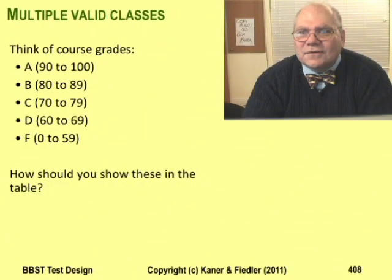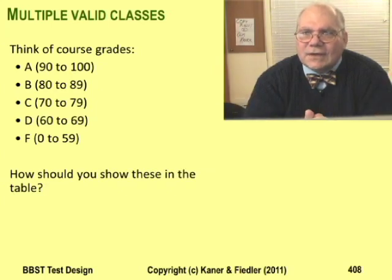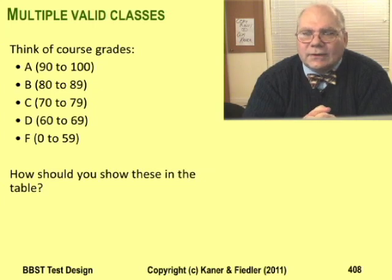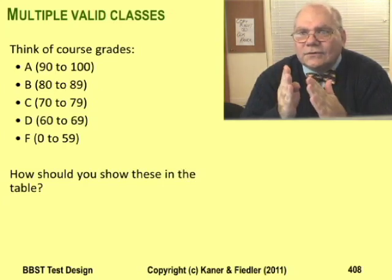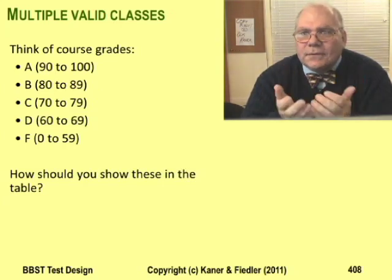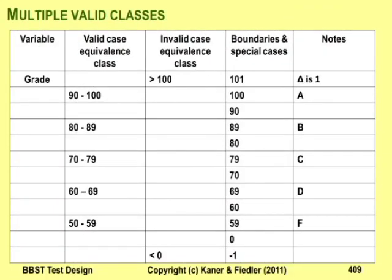So far, I've considered a very simple partitioning. In the page width example, there is one valid partition from 1 to 56 — everything else is invalid. But many variables have several valid partitions. For example, university students can earn grades. At Florida Tech, where I teach, a student who gets 90 or above receives an A, 89 a B, 79 a C. These are all valid partitions. Here's how to show tests in an equivalence class table when your variable has multiple valid partitions — it's pretty much the same as variables with just one valid partition.